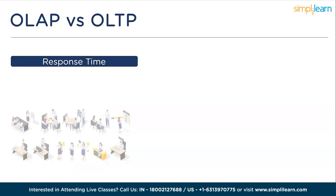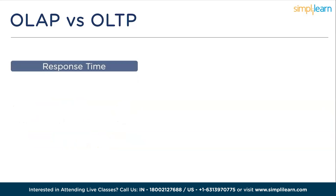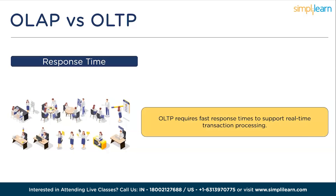Moving ahead, we have response time. OLAP allows for longer response times since it deals with complex queries and large data sets; users expect analytical reports to be generated within minutes or even hours. OLTP requires fast response times to support real-time transaction processing, with users expecting quick responses usually in milliseconds or seconds — much faster than OLAP.